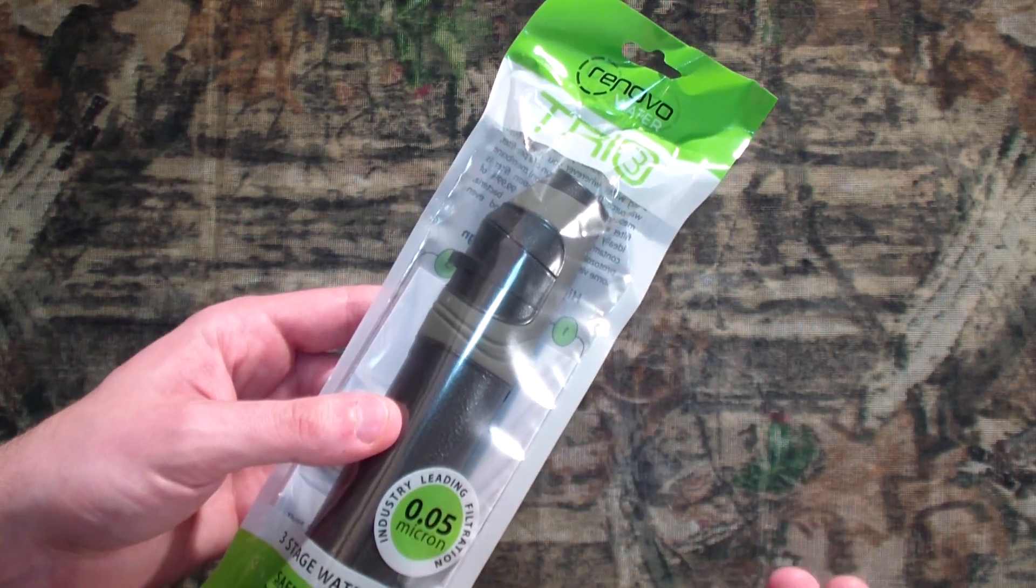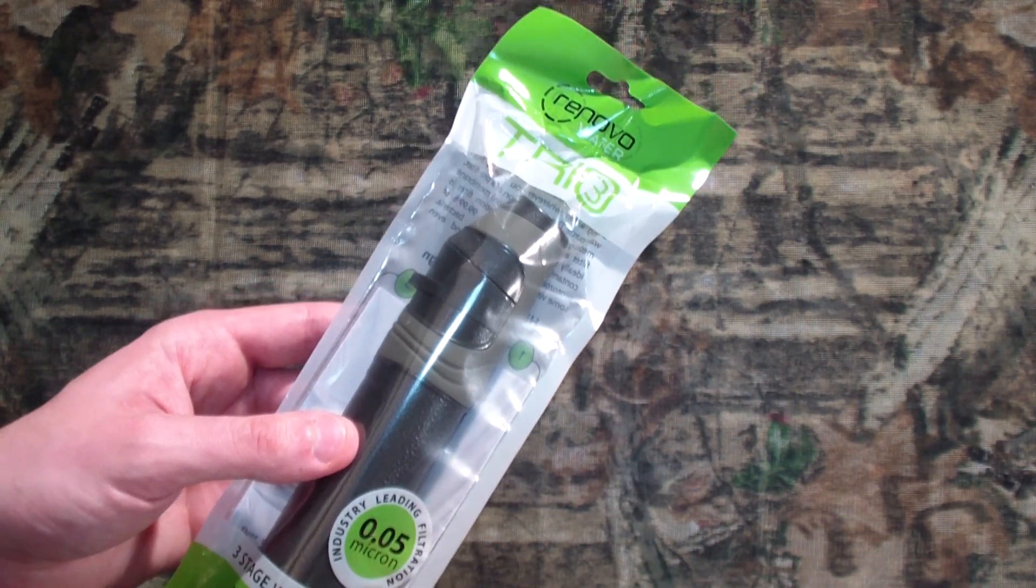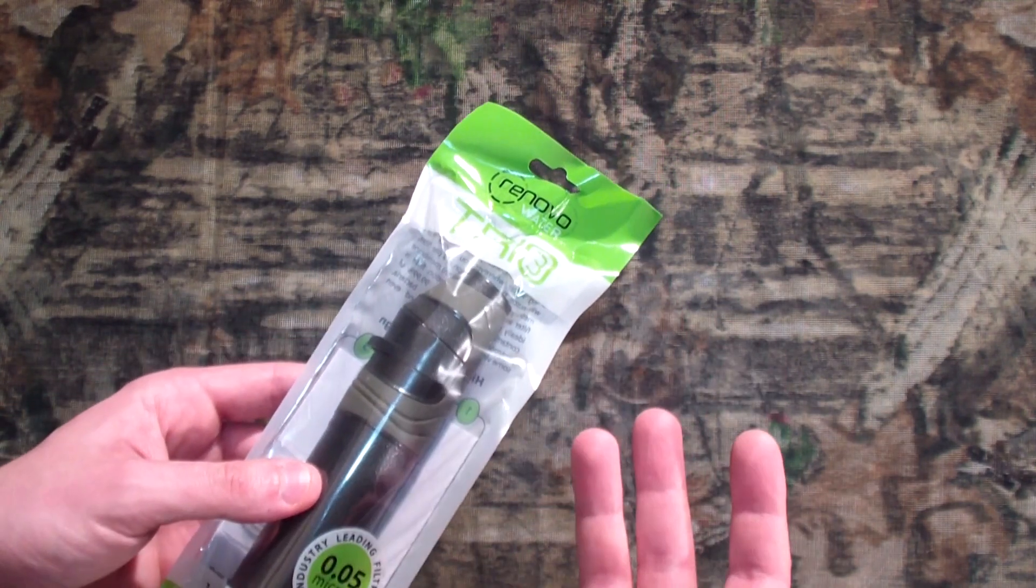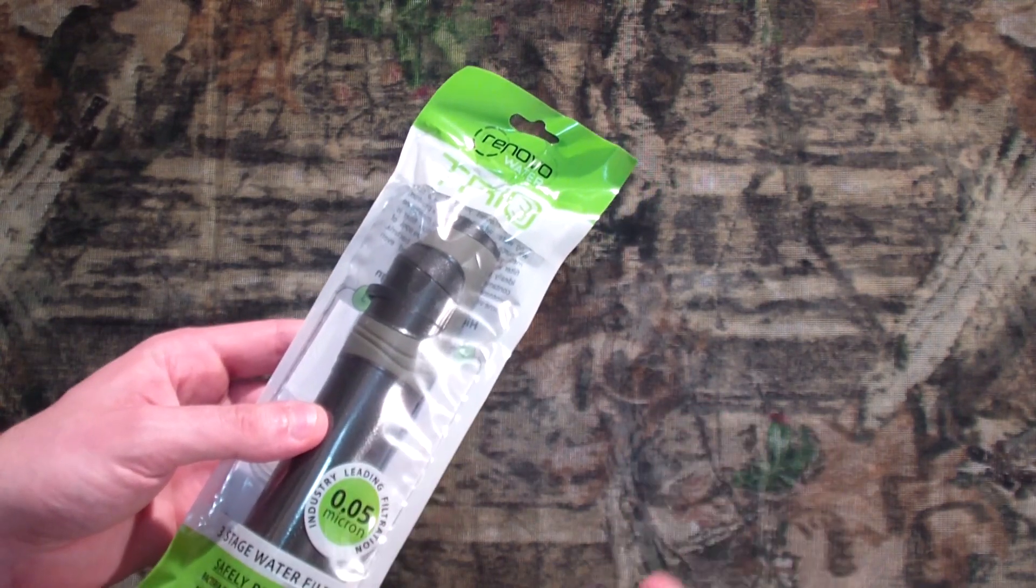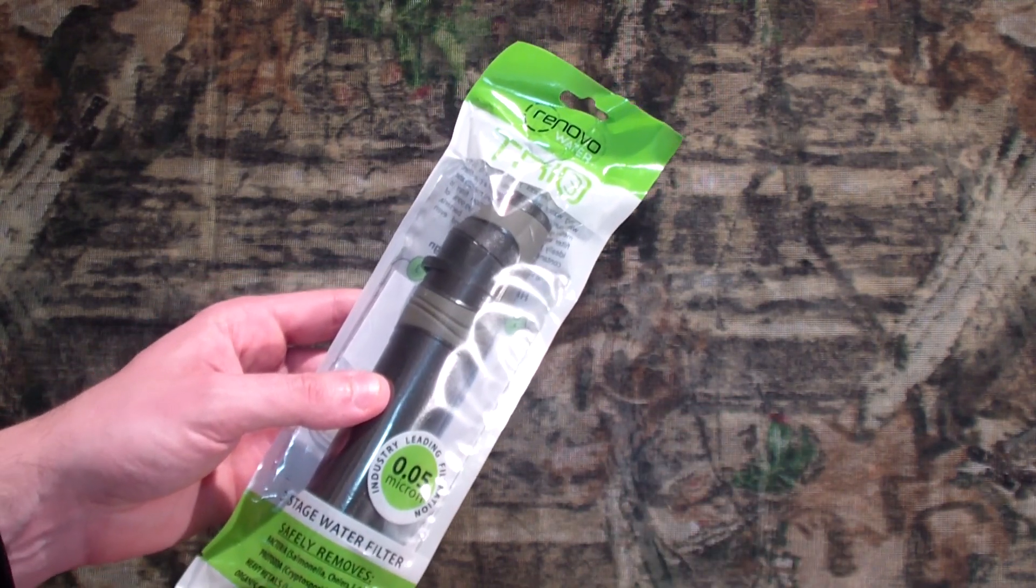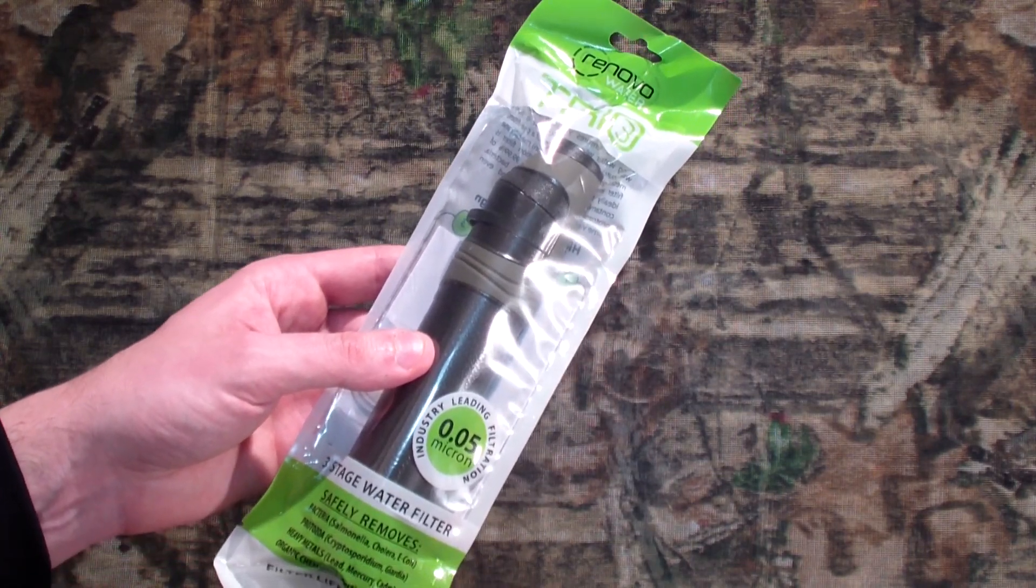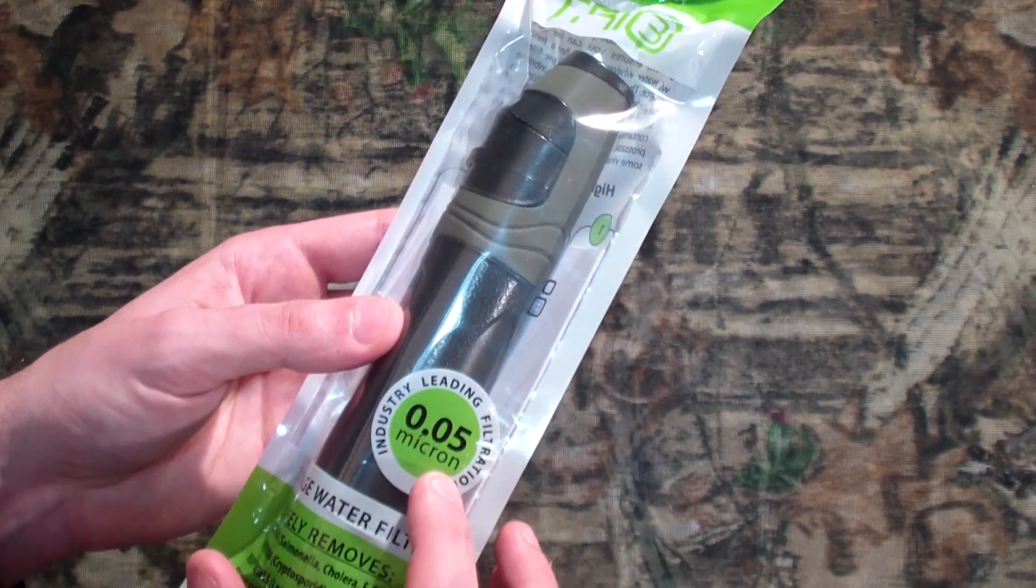Now anything below 0.1, I haven't seen in a backpacking portable type filter. I know in my other videos I've said that and people have said, well there's this filter and that filter that go down to 0.01 or whatever, and that's true. But for something that's actually affordable and portable, or translation practical for backpacking, bugging out, bushcraft, emergency type situations, there's really nothing out there.